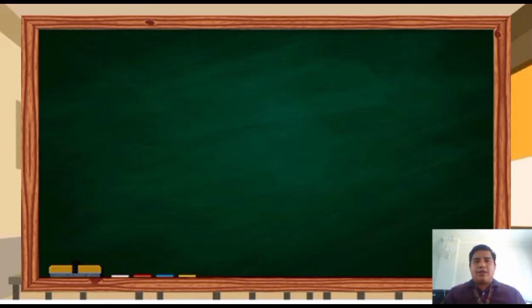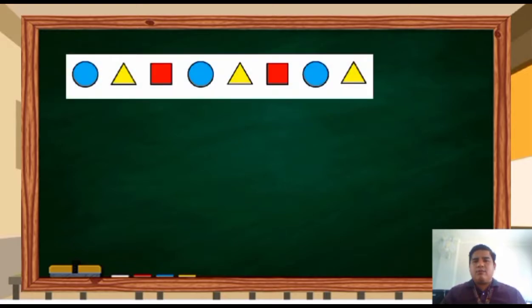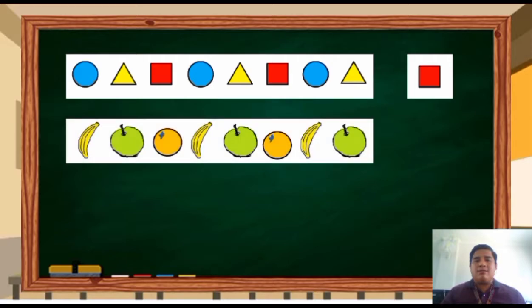Take a look at this. What do you think is the next figure? We have a red square because it follows the rule. What about this? Is it a banana, a green apple, or an orange? That's right! The next element is an orange.